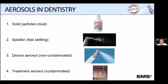First, we have the solid particles that I previously defined as dust. This is the powder itself — the powder creates dust. These dusts can spread in the atmosphere and deposit inside the office, and have their own problem. Then we have the splatter: quite big water droplets spread in the air around the treatment area — these settle fast and deposit around the area. Then we have the device aerosol — the device creates an aerosol with the water used inside, but the device aerosol is mainly non-contaminated. And at the end, we have the treatment aerosol, which is what could be contaminated and is under discussion.